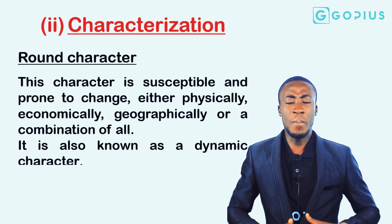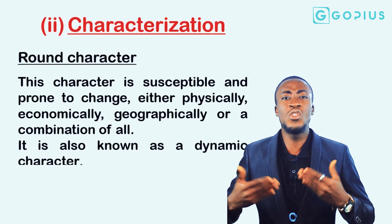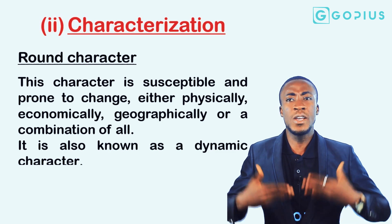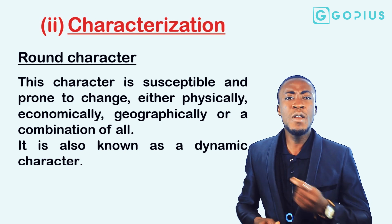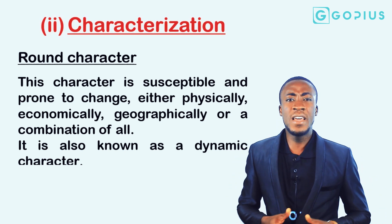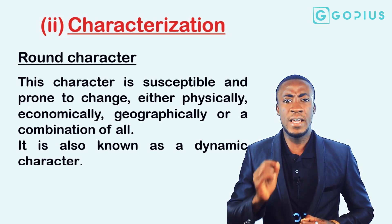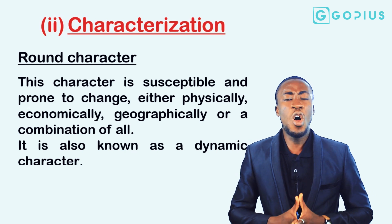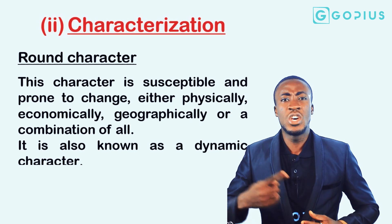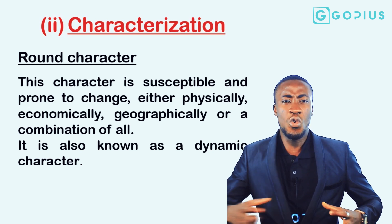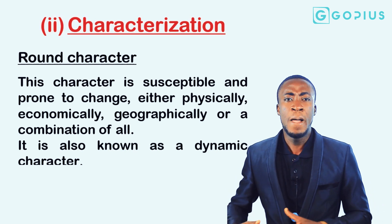A round or dynamic character grows and develops from the beginning of the work up to the end, with high and noticeable changes in terms of economic, geographical, or even physical growth. A very practical example is the heroine used by Flora Nwapa in her book titled One is Enough. In that work we see Amaka as the heroine, and we observe the level of growth she undergoes throughout the period covered by the narrative.